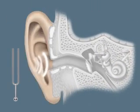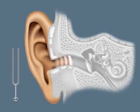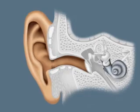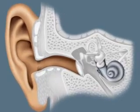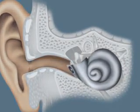Sounds are vibrations of the air. These vibrations, captured by the auricle, are routed into the external auditory canal. They are then transmitted from the tympanic membrane to the ossicles, and finally to the cochlea in the inner ear.